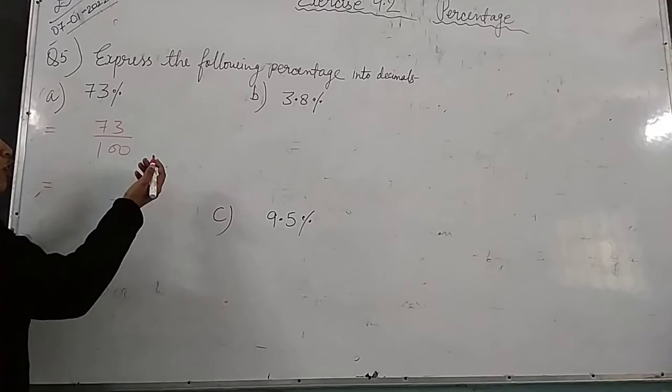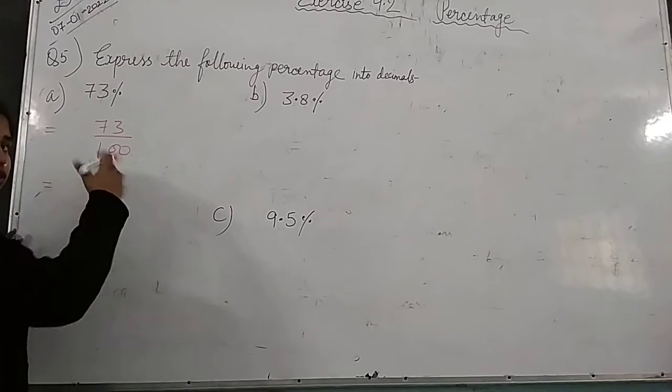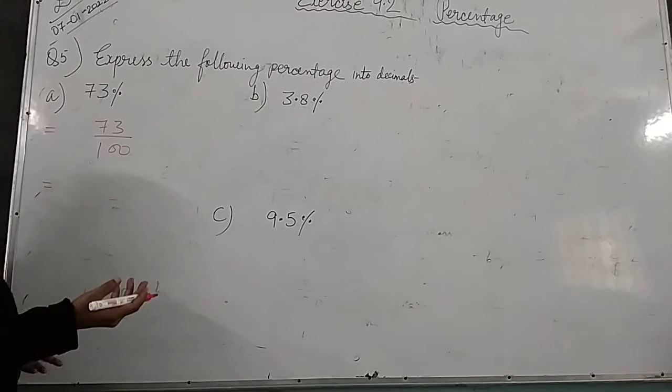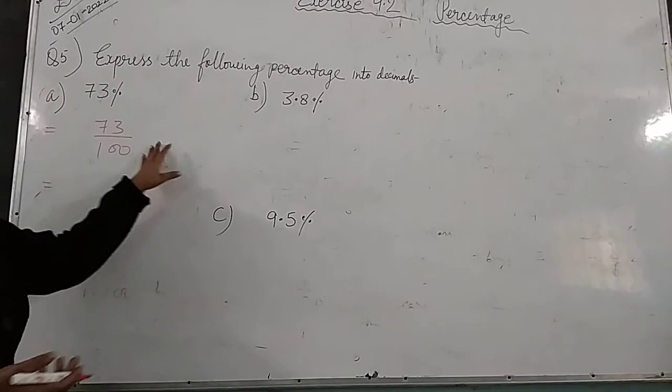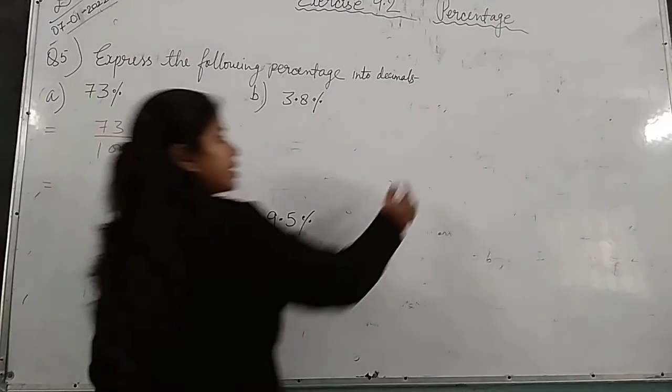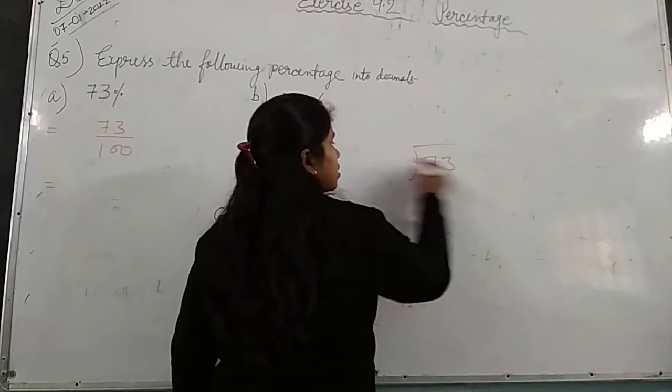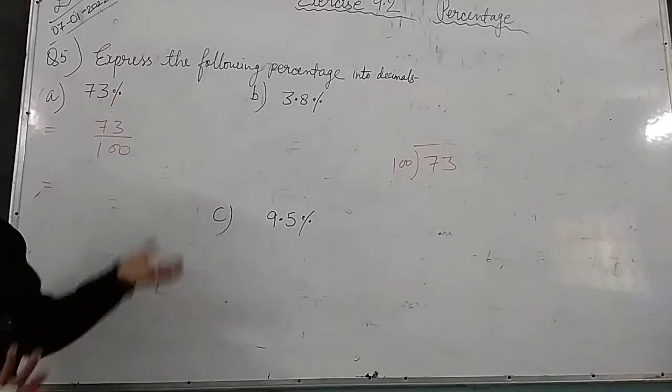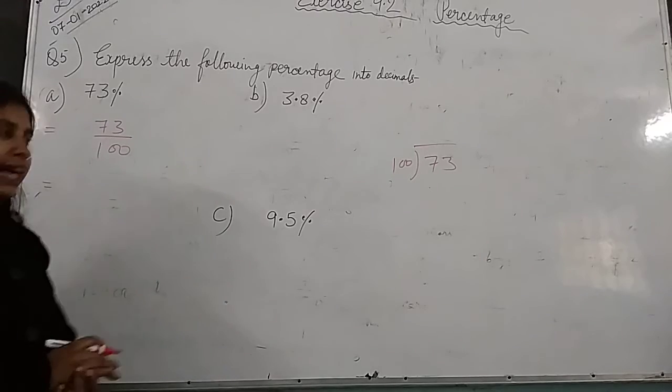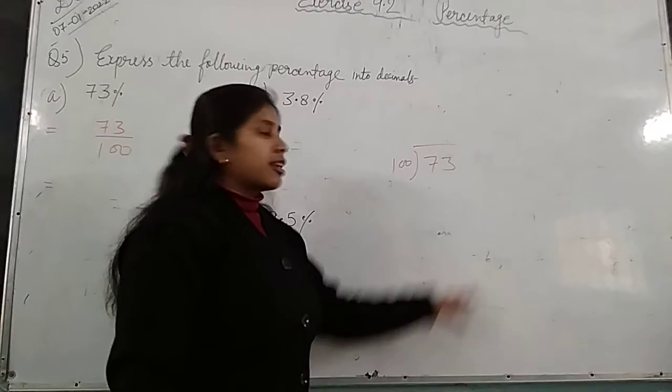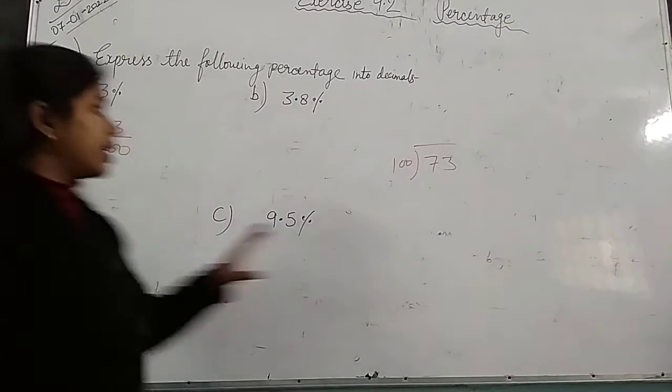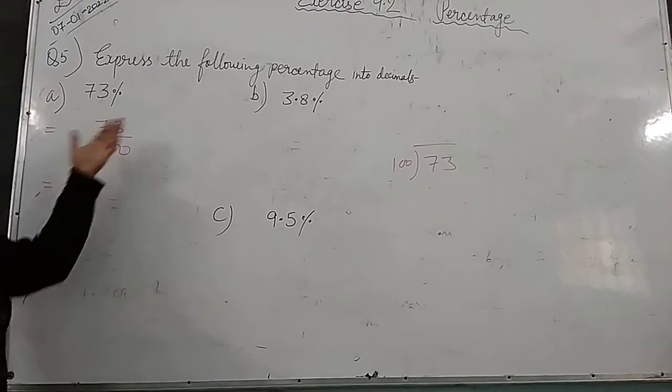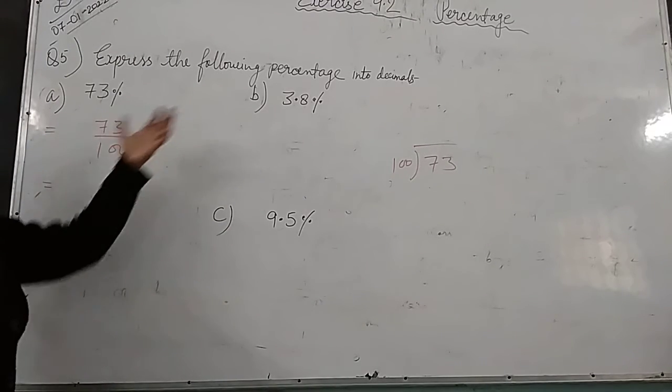If you want to solve this in linear form you can solve it, and if you know the formula then you can do it, otherwise you can divide this one. When we know the formula, we need to do quite a calculation. So 73 upon 100, then the decimal form will convert. What is the formula? How many zeros here? Two zeros.